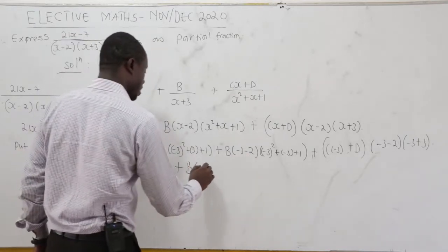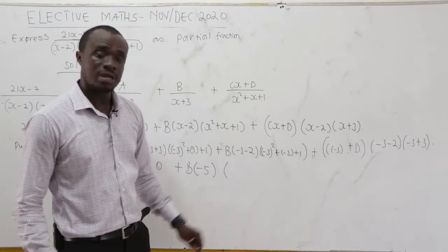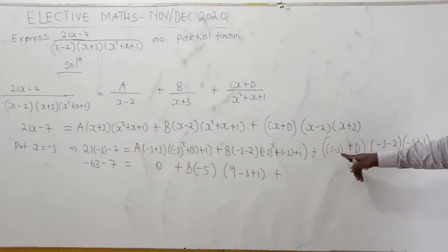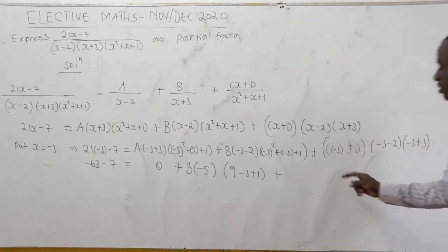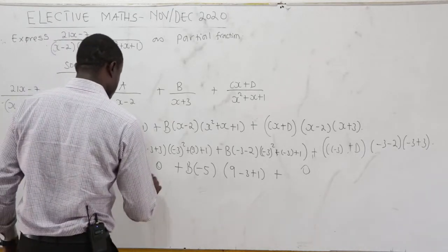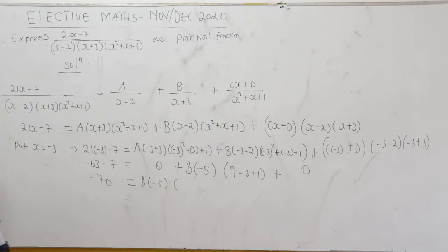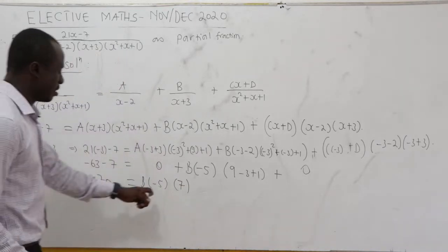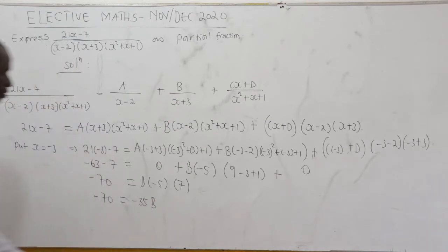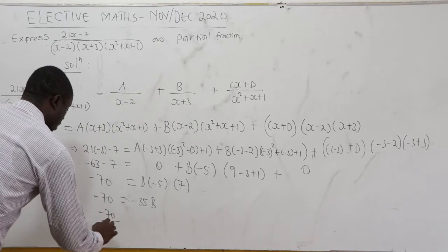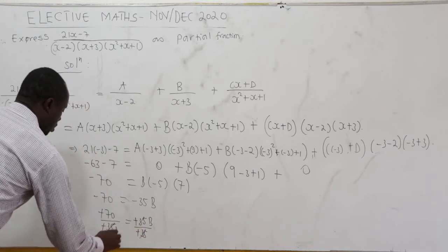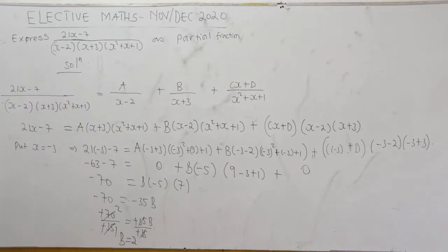So we have negative 63 minus 7 equals B times (negative 3 minus 2) times (9 minus 3 plus 1). That is negative 70 equals B times negative 5 times 7, which is negative 35. Dividing both sides by negative 35 gives B equals negative 70 over negative 35, so B equals 2.